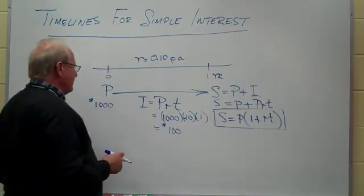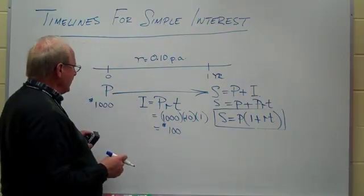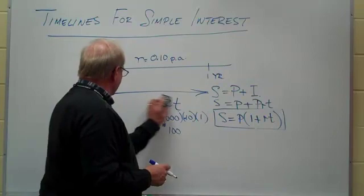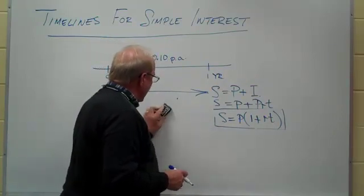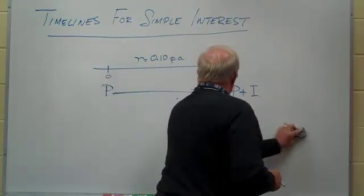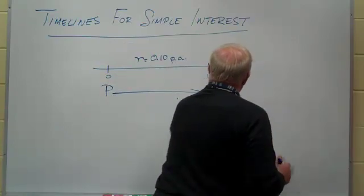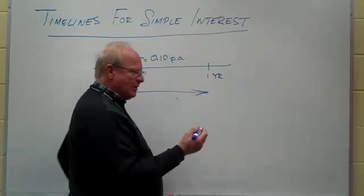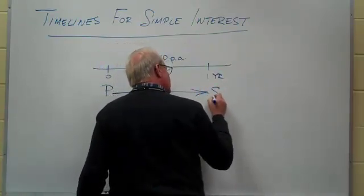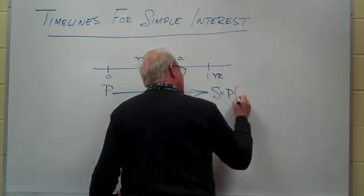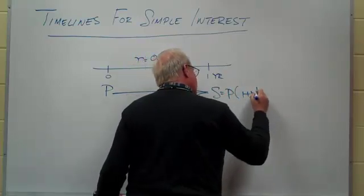Now if you'll just bear with me for another minute, I would like to show you one other thing about this. So I'm going to take that off, and we now know, and I'll write the result here, that when you're going ahead in time, the future value of simple interest is equal to P times the quantity one plus RT.